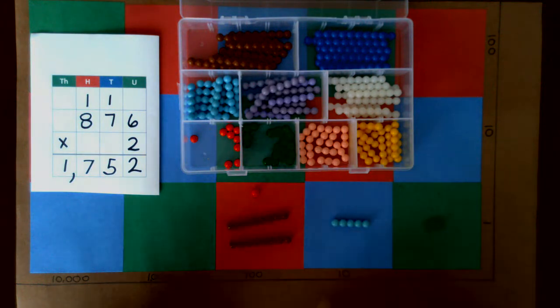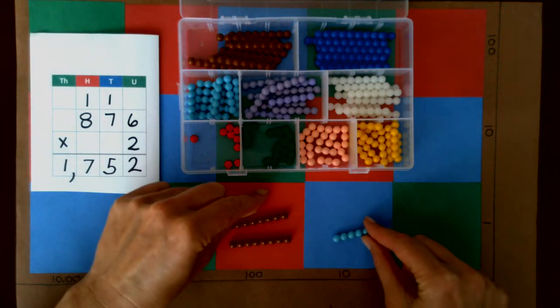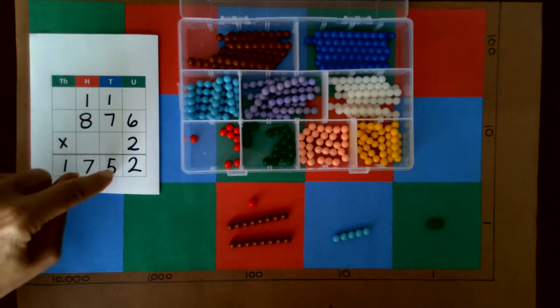So my one goes in the hundreds place and my five goes here just as it is on paper.